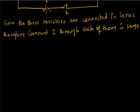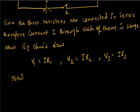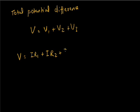By Ohm's law, the potential drop across each resistor is given as: V1 equals I R1, V2 equals I R2, and V3 equals I R3. Since V is the total potential difference across the three resistors, therefore total potential difference V equals V1 plus V2 plus V3. Substituting these values, we get V equals I R1 plus I R2 plus I R3.